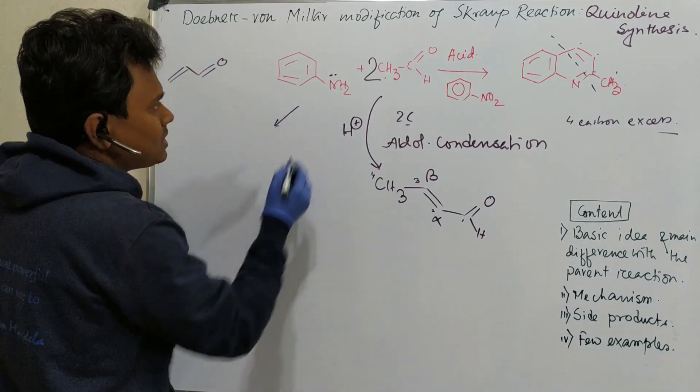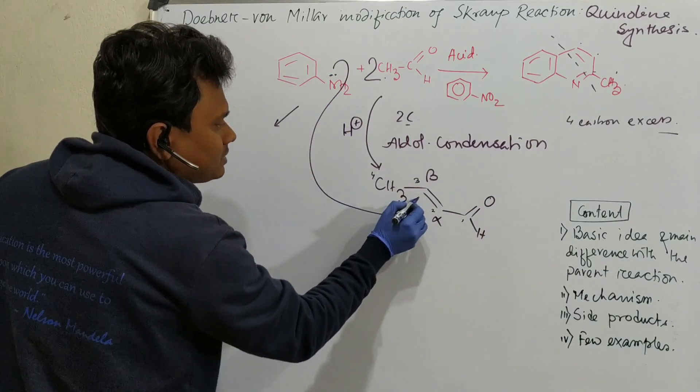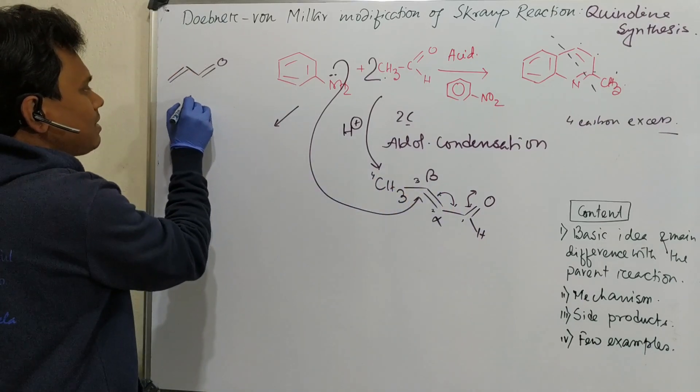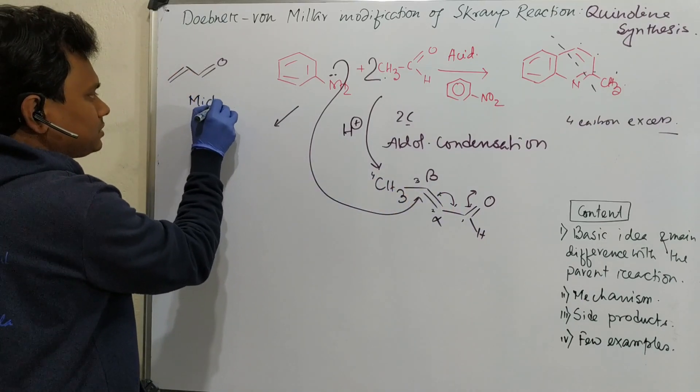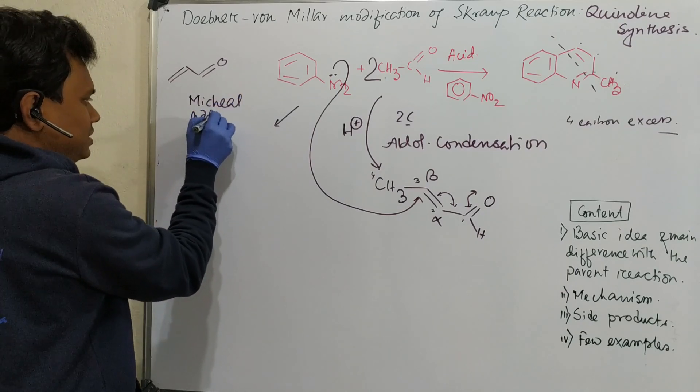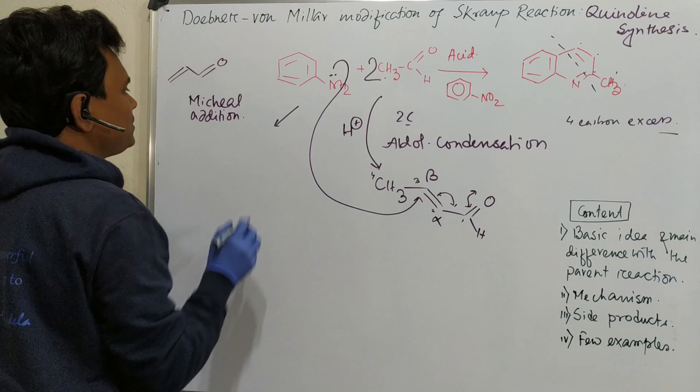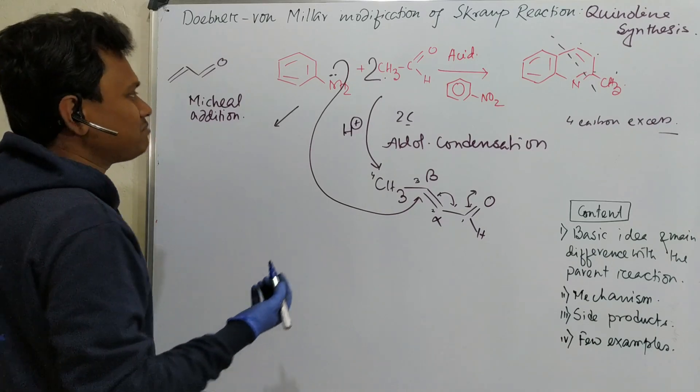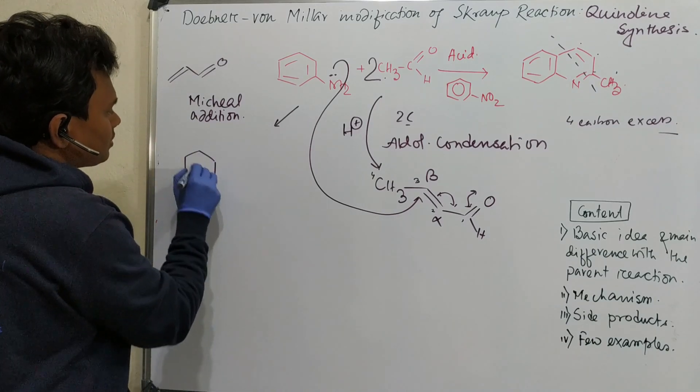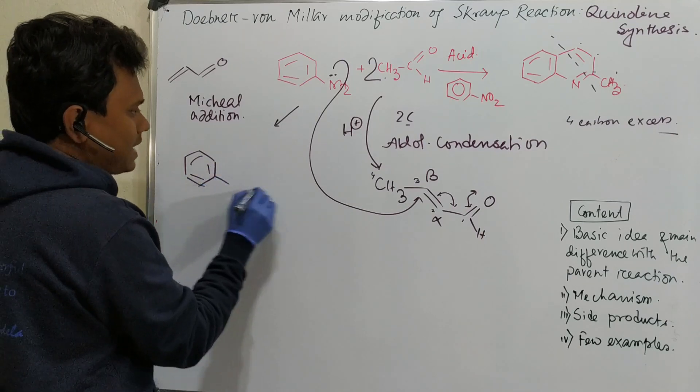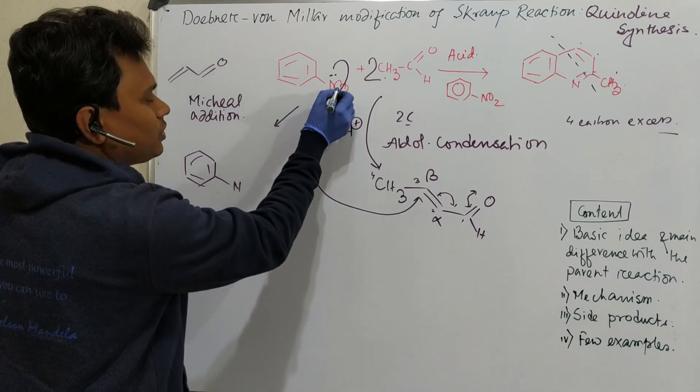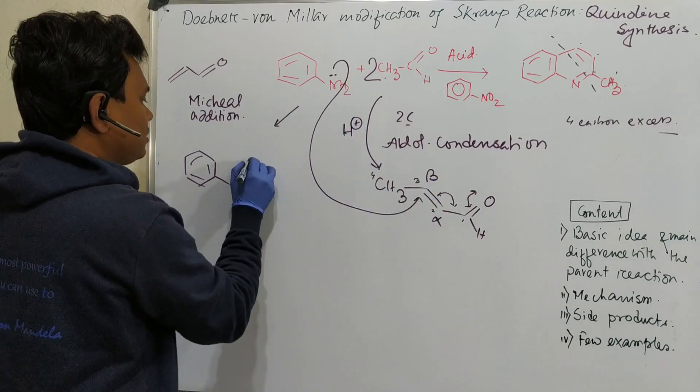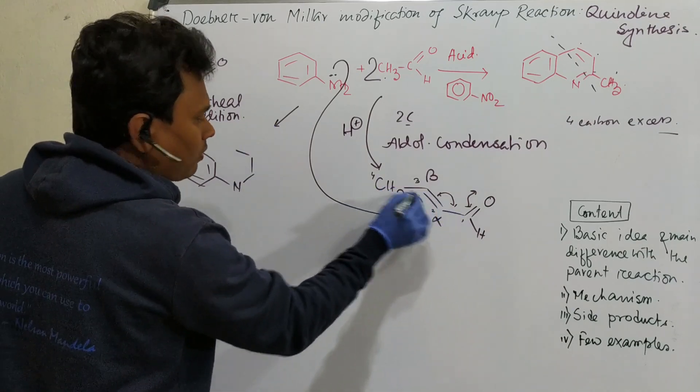So if you look at this what happens? This attacks at this carbon. It opens up. It comes back. So ultimately this is a Michael addition. Sometimes my English spelling may be wrong. So I request you please don't mind. Correct it by your books. Because English is not my mother tongue. Sometimes that's why some mistake happens.